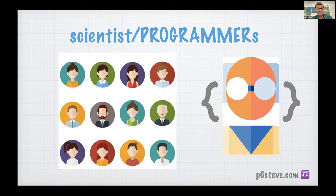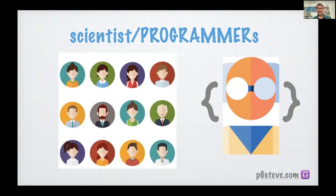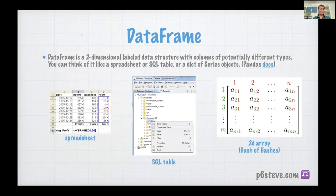Within that set of people, I think there's a spectrum — between people who are deep scientists who really don't care about the tools and use Python and pandas because everybody else does, with a lot of support and education around that, and at the other end, people who do data science but have more of a programming mindset and are quite interested in finding new ways to do things that might be more efficient and more flexible.